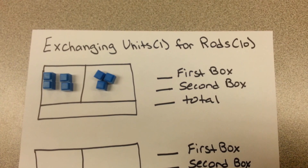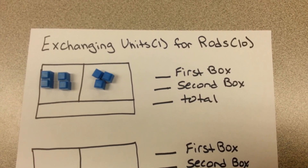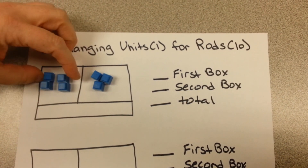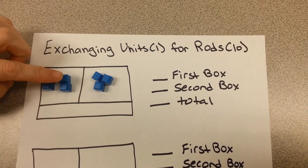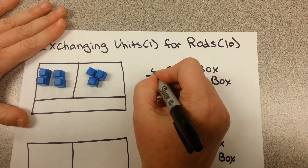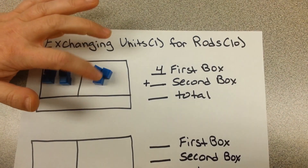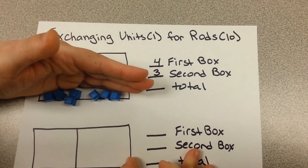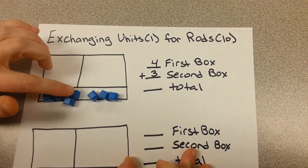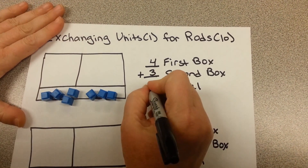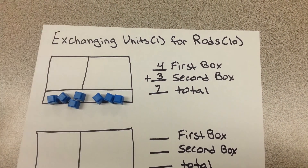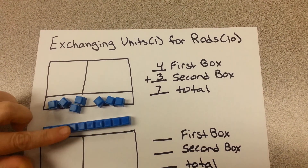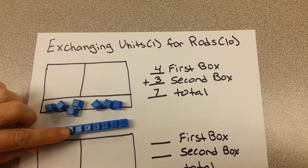Let's practice exchanging single units for rods. In this example, our first box has four individual units and our second box has three individual units, giving us a total of seven. In this case we wouldn't have enough to exchange for a rod, because we need ten individual units in order to make that exchange.